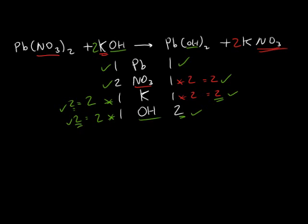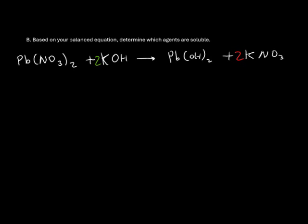Therefore, the balanced equation for this is Pb(NO3)2 plus 2KOH yields PbOH2 plus 2KNO3. Now, based on this balanced equation, we can find which of these agents are soluble. To find that, we'll go to our solubility rules and we'll start with Pb(NO3)2.